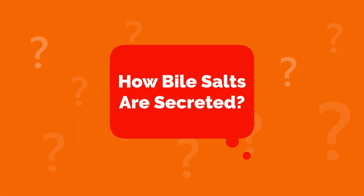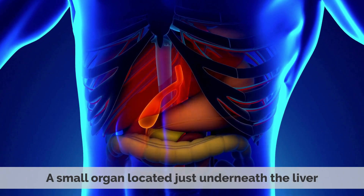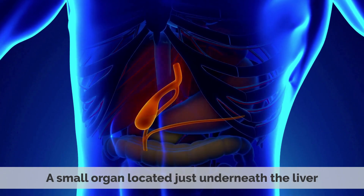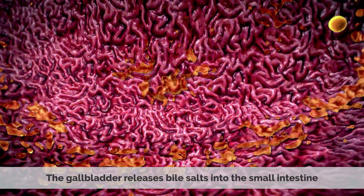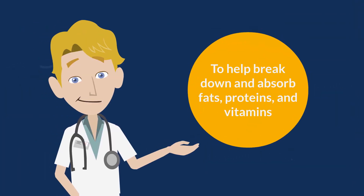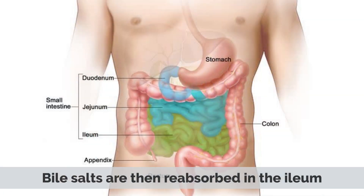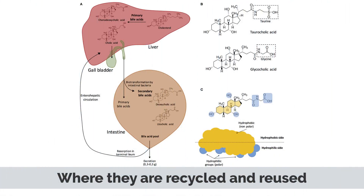Bile salts are secreted from the gallbladder, a small organ located just underneath the liver. When we eat a meal, the gallbladder releases bile salts into the small intestine to help break down and absorb fats, proteins, and vitamins. Bile salts are then reabsorbed in the ileum and sent back to the liver, where they are recycled and reused.